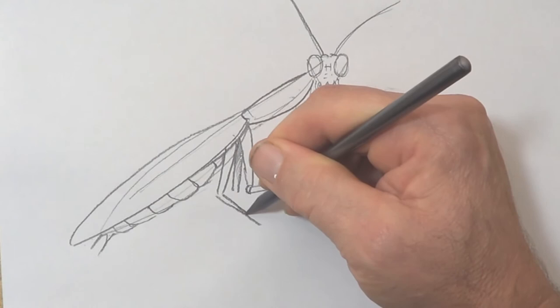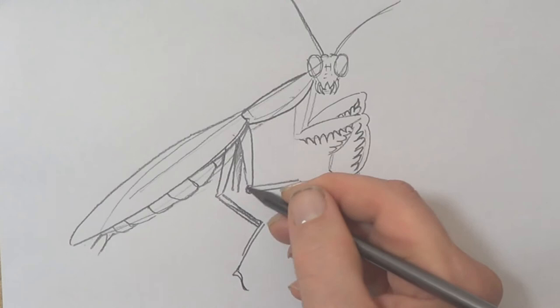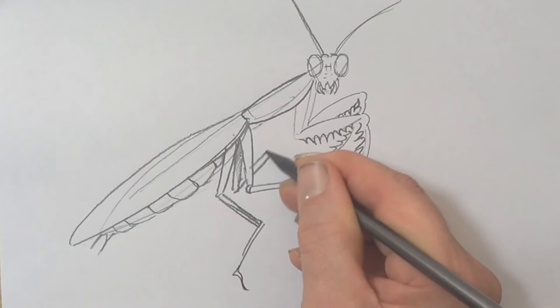It's going to go back here. And again that funny little bit at the end. And this one, this is the other front leg that's going forward there. And I think I'll make it come down and cross just through there.